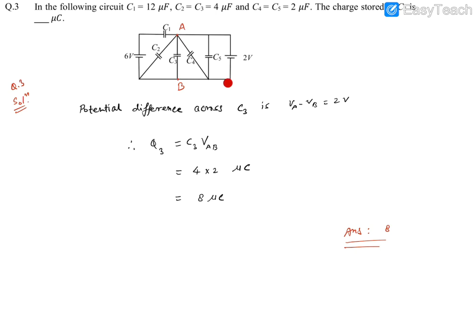Consider this loop which is this point tracing, so this says the potential difference across A and B point is going to be 2 volts. Now since you know the potential difference across A and B point, then you know the potential difference across this capacitor which is 2 volts.